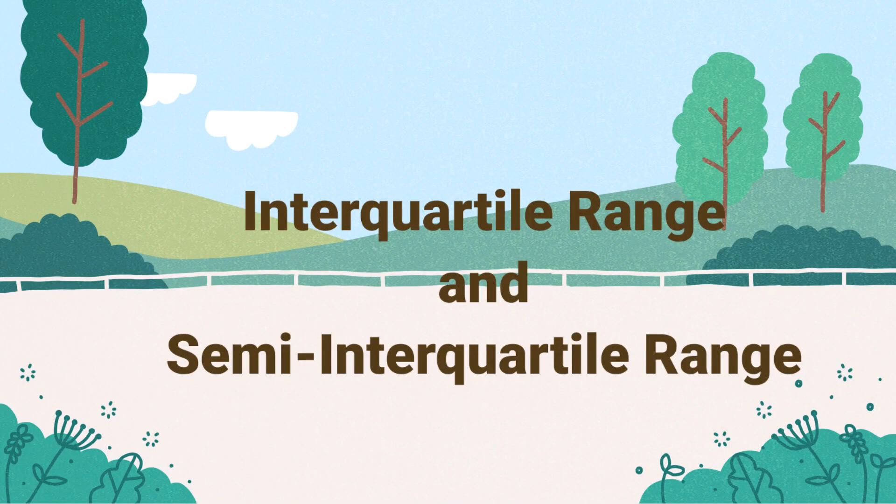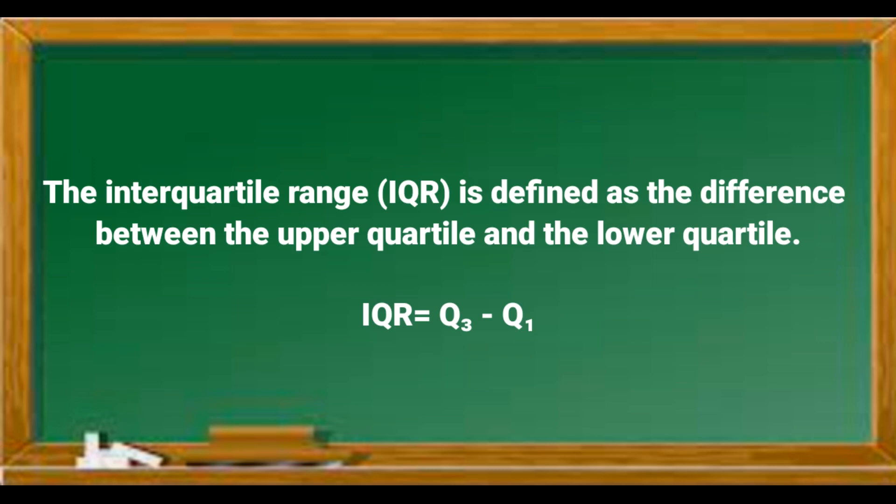Today we are going to learn about interquartile and semi-interquartile range. The interquartile range, IQR, is defined as the difference between the upper quartile and the lower quartile.